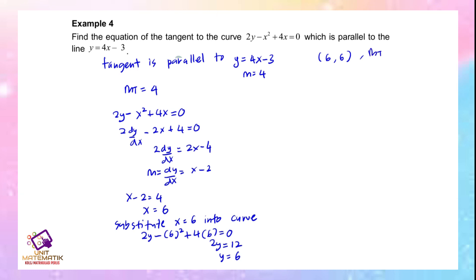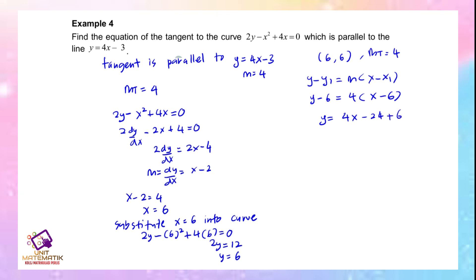With m tangent = 4 and point (6, 6), we use the formula: y - 6 = 4(x - 6). Simplifying: y = 4x - 24 + 6, therefore the equation of the tangent is y = 4x - 18.